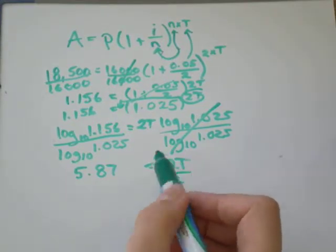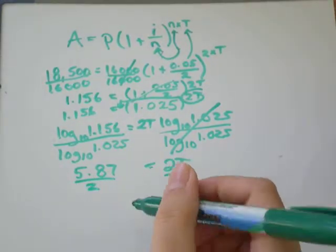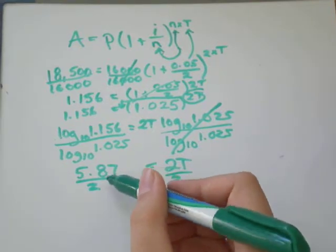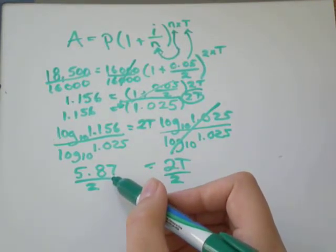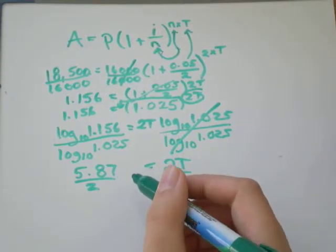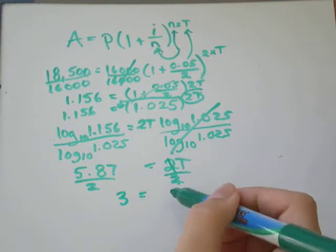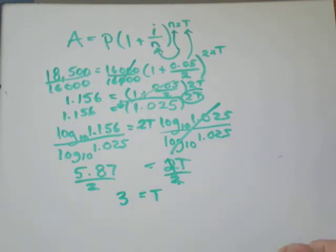Divide both sides by 2. And I get, this is equal to, I got 2.9 when I did 5.87 divided by 2. You can just round that to the nearest whole number, which would be 3. Those 2s will cancel out, and I'll be left with t.